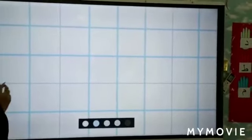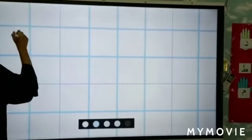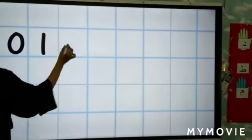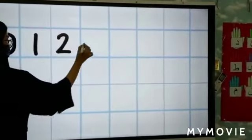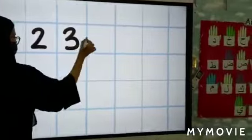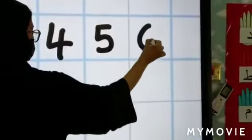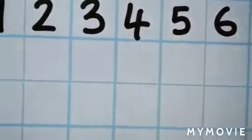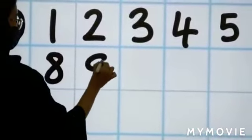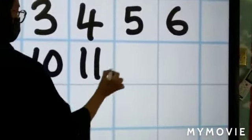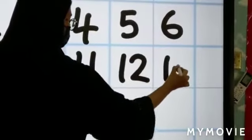Now go get your paper and pencil and write with me from zero to thirteen. Come on. Let's do it together. Zero, one, two, three, four, five, six, seven, eight, nine, ten, eleven, twelve, thirteen.